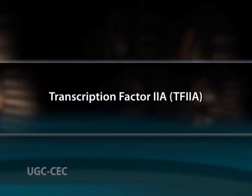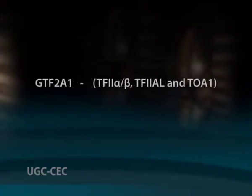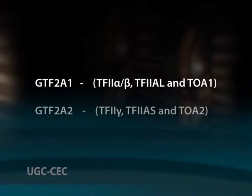Now let us see about transcription factor 2A, in short called TF2A. It is one of the several GTFs essential for all transcription events that use RNA polymerase 2. It is a nuclear protein involved in the RNA polymerase 2 dependent transcription of DNA. TF2A is encoded by 2 separate genes. One gene, GTF2A1, encodes a large subunit consisting of TF2 alpha-beta, TF2AL and TF2A1. Another gene, GTF2A2, encodes a small subunit consisting of TF2Y, TF2AS and TF2A2.